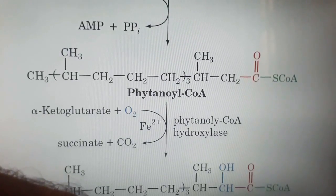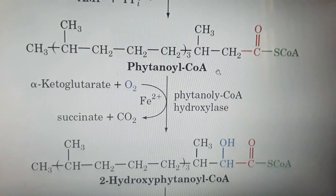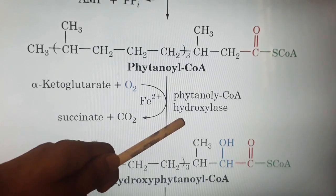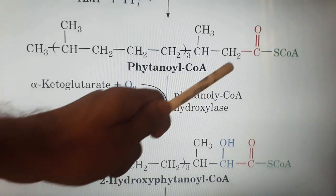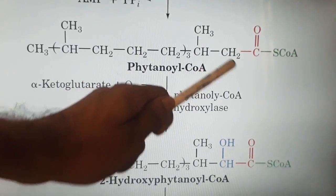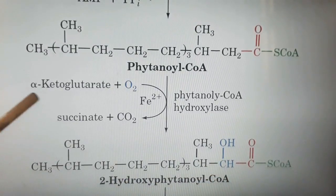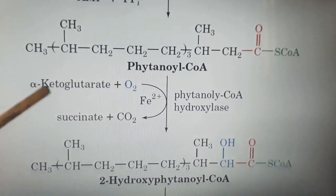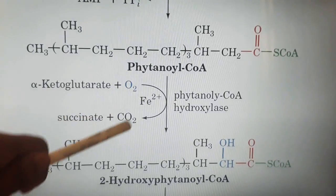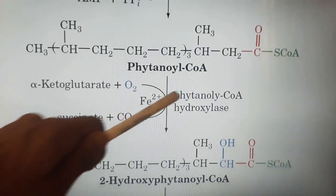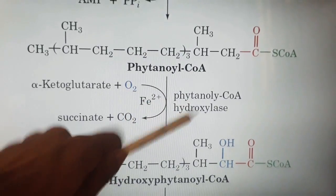In the next step, the alpha carbon of phytanyl-CoA is oxidized by an enzyme known as phytanyl-CoA hydroxylase. This enzyme oxidizes the alpha carbon to an OH group. Alpha-ketoglutarate is converted to succinate, and O2 is converted to CO2. Fe²⁺ is the cofactor of the phytanyl-CoA hydroxylase enzyme.